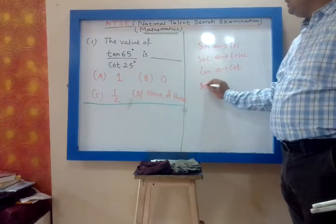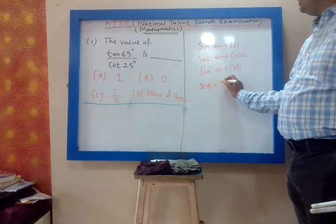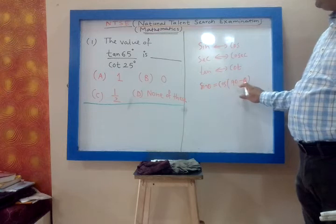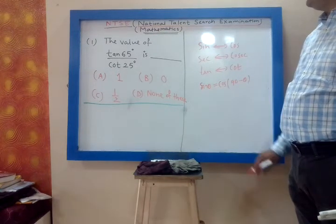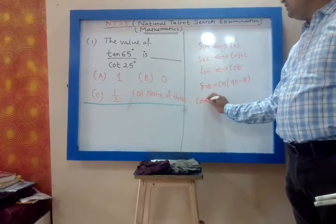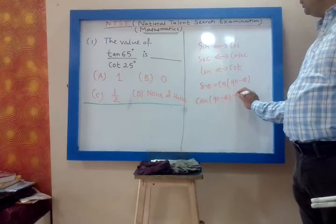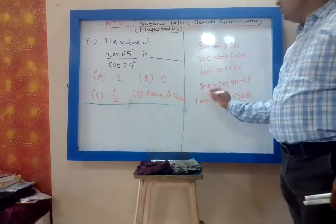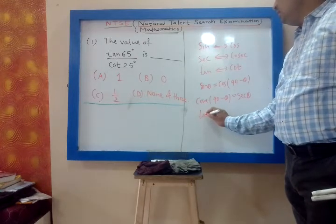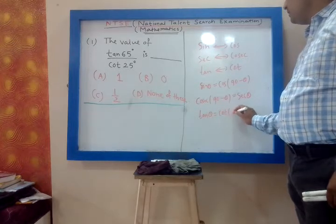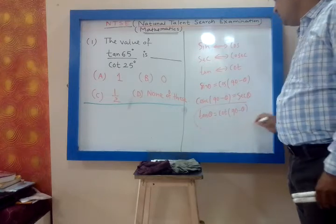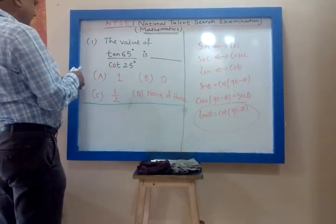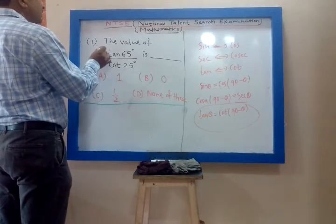The complementary angle relation: sin theta equals cos(90 minus theta). Similarly, cosec(90 minus theta) equals sec. And tan theta equals cot(90 minus theta) — so there is a complementary angle relation between tan and cot. Therefore, tan 65 upon cot 25.